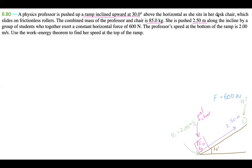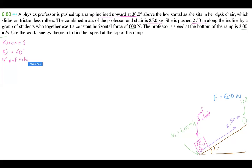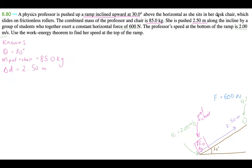Now that we've drawn out this problem, let's write down all of our knowns and then discuss some concepts first. Our knowns are: angle theta equals 30 degrees, the mass of the prof plus the chair equals 85.0 kilograms, the distance that the professor is pushed is 2.50 meters — that's her displacement — the force the students exert is 600 newtons, and her speed at the bottom of the ramp is 2.00 meters per second.